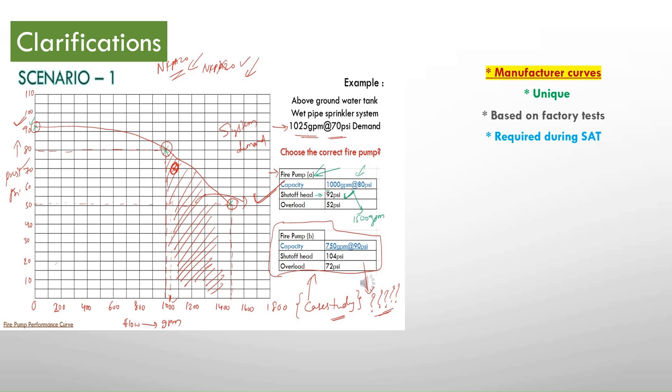So related to the pumps also we have two points that has to be clarified. So first point is that the pump may be used for any system demand that falls on or under the pump curve when plotted with the water supply source. What does it mean?